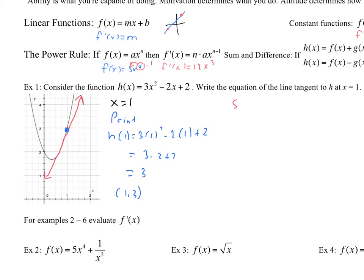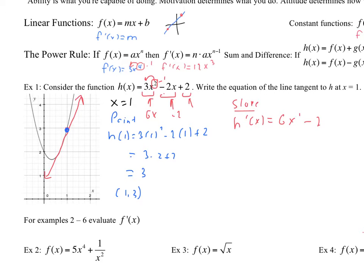Now to find the slope, we need the derivative of h of x. That's where sum and difference comes into play — I look at all the pieces individually. The first piece: 2 times 3 is 6, x to the 2 minus 1 is 1, so 6x. Then we have a linear term, negative 2x, so minus 2. And the constant term has a derivative of 0. So h prime of x equals 6x minus 2. Evaluating at x equals 1: 6 times 1 minus 2 equals 4.